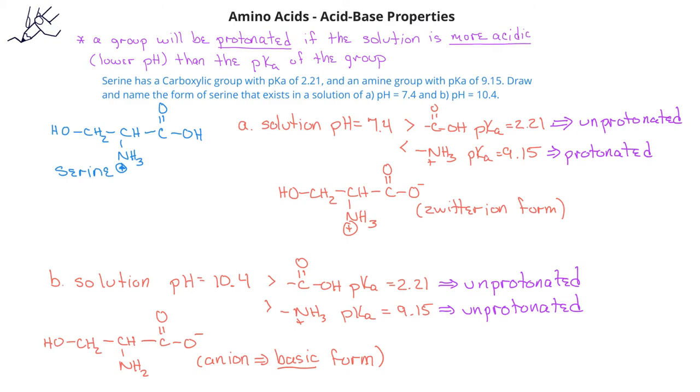So overall, in a solution of pH 10.4, serine will be in its basic or anion form.